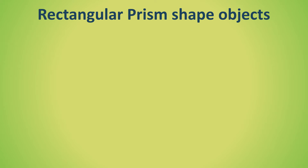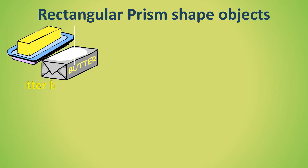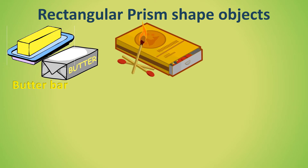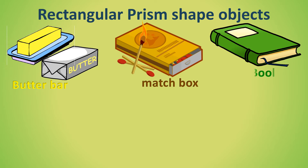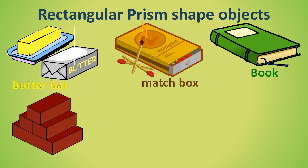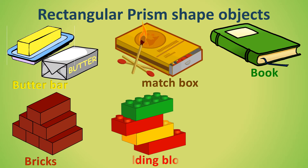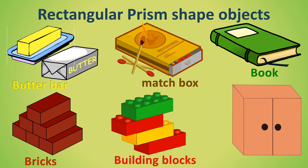Rectangular prism or cuboid-shaped objects: Matchbox, book, bricks, building blocks. All these are rectangular prism-shaped objects — we can also call them cuboid-shaped objects.